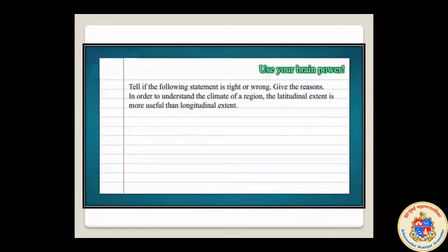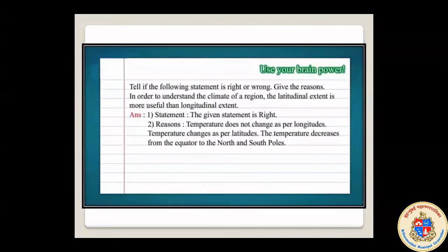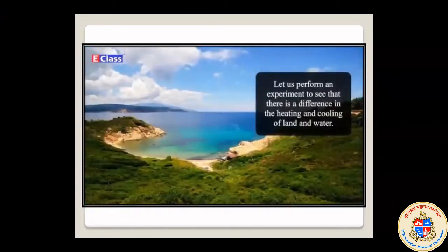Tell if the following statement is right or wrong and give the reason: 'In order to understand the climate of a region, latitudinal extent is more useful than the longitudinal extent.' Latitude means the horizontal line and longitude means the vertical line. The statement is right. The reason is that temperature does not change with longitudes — the vertical lines. Temperature changes with latitudes — it decreases from the equator to the North and South Poles.